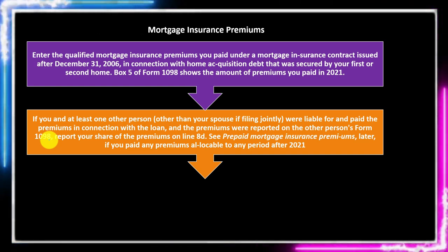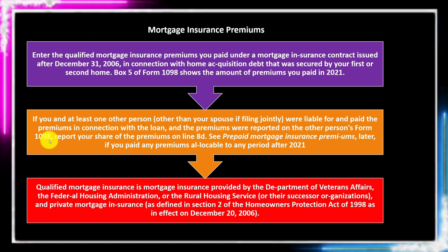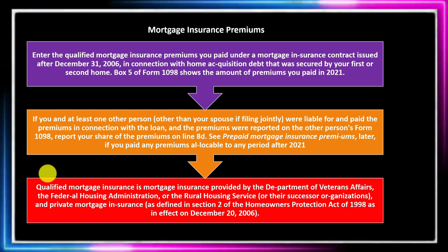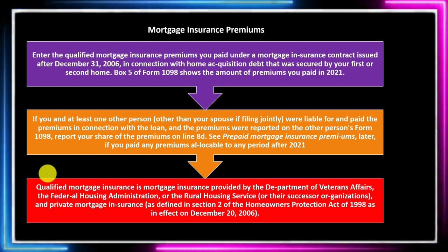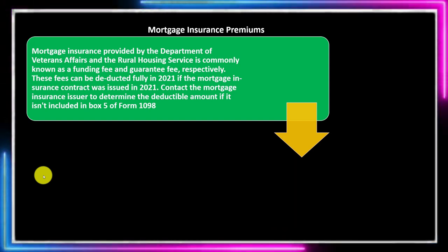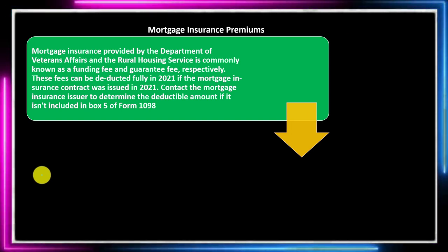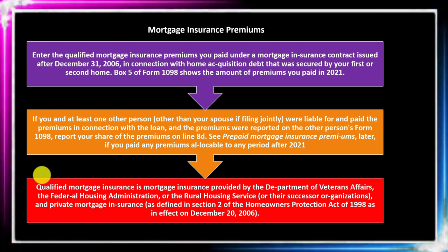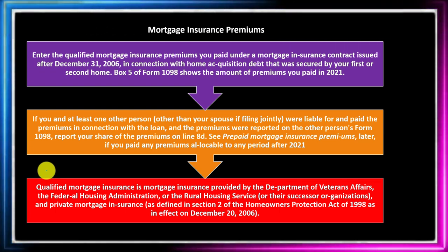If you paid any premiums allocable to any period after 2021, note the prepaid mortgage insurance premiums rules. Qualified mortgage insurance is provided by the Department of Veterans Affairs, the Federal Housing Administration, or the Rural Housing Service, as well as private mortgage insurance as defined in Section 2 of the Homeowners Protection Act of 1998 as in effect on December 20, 2006. These government-related entities help provide added security to lenders to make the loan possible.